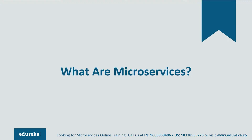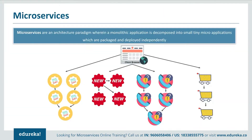Now, many questions may come to your mind — such as what were the advantages of the new architecture, how could the developers benefit from it, and what were the new challenges faced. Let's discuss each of them one by one. Microservices are basically an architecture wherein a monolithic application is decomposed into small, micro applications which are packaged and deployed independently.